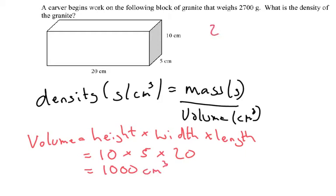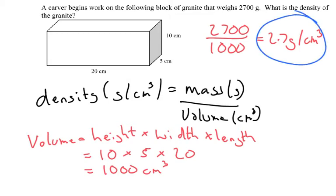So if I do the mass, 1700 grams, divided by the volume, which is 1000, I get 2.7 grams per centimetre cubed. And that is my final answer.